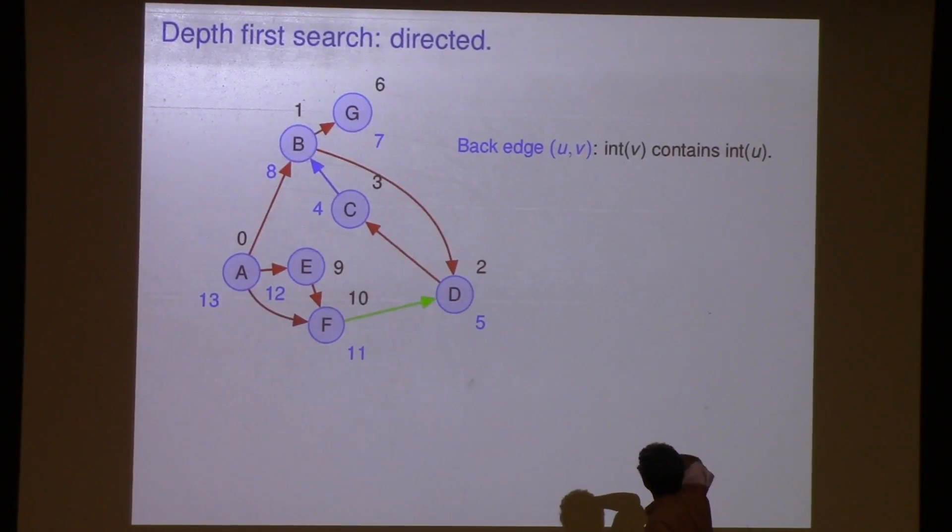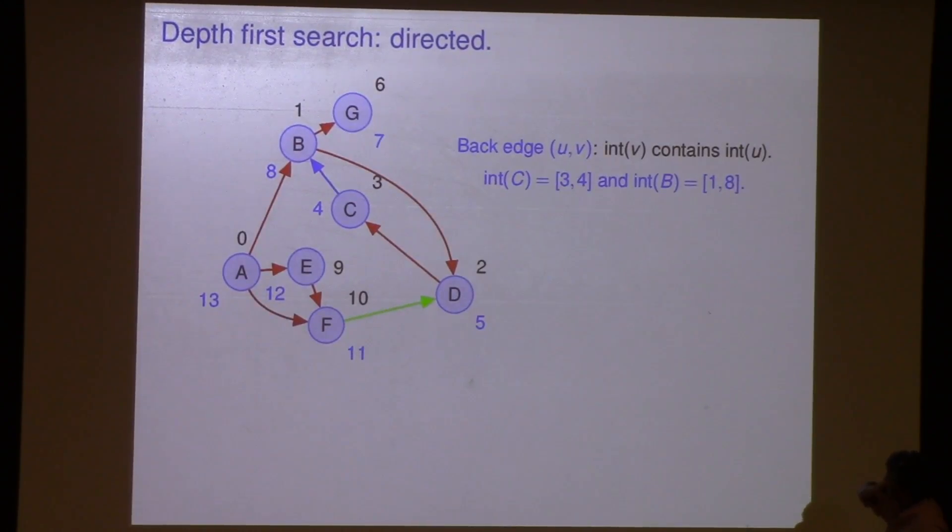So that's nice, right? The back edge U, V, the interval of V contains U. Interval of C is 3, 4. It's inside of 1, 8. Why do we know that causes a cycle? We can see it in this example, but why do we know that? If we see a back edge, we know there's a cycle. That's what I'm trying to argue. Why do we know that?